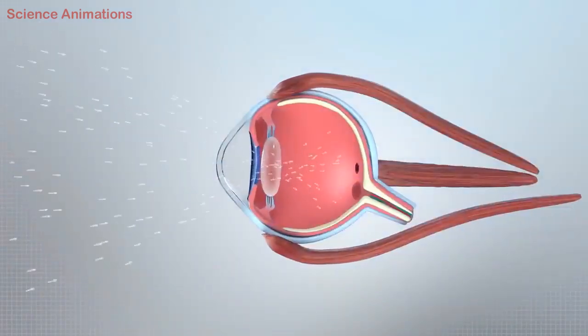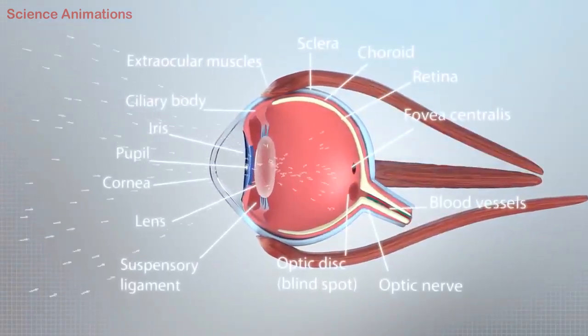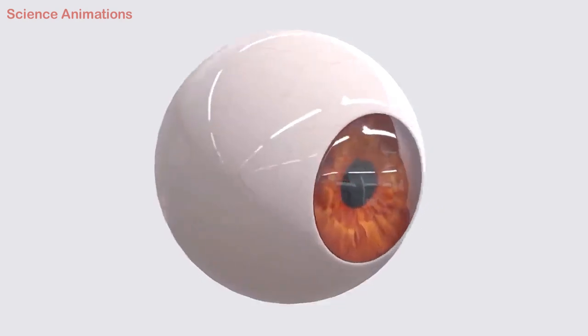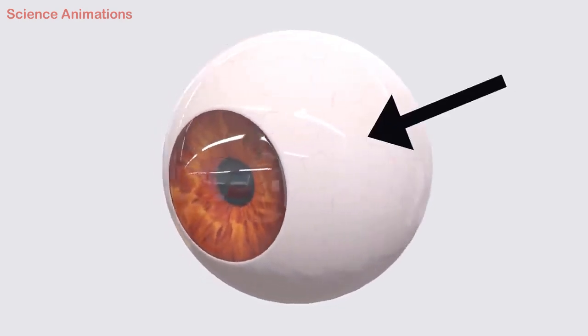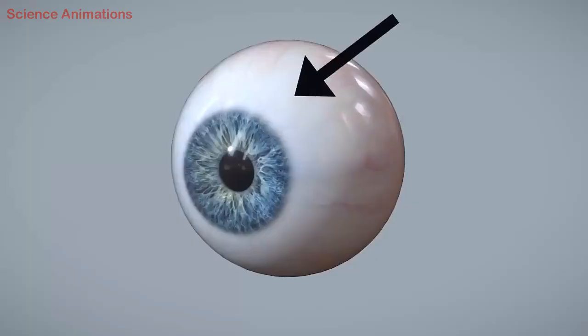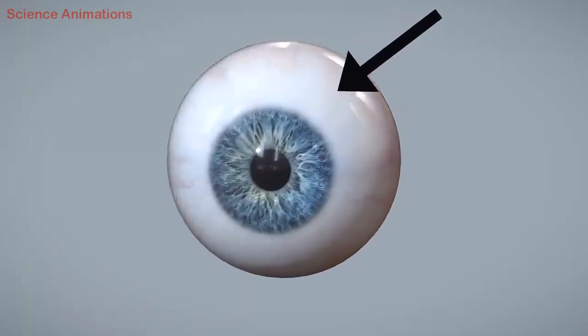If we observe the horizontal cross-sectional view of the human eye, it reveals some major parts of the eye. The eye consists of three layers of tissues, with the outermost being the fibrous layer. This layer maintains the shape of the eye.